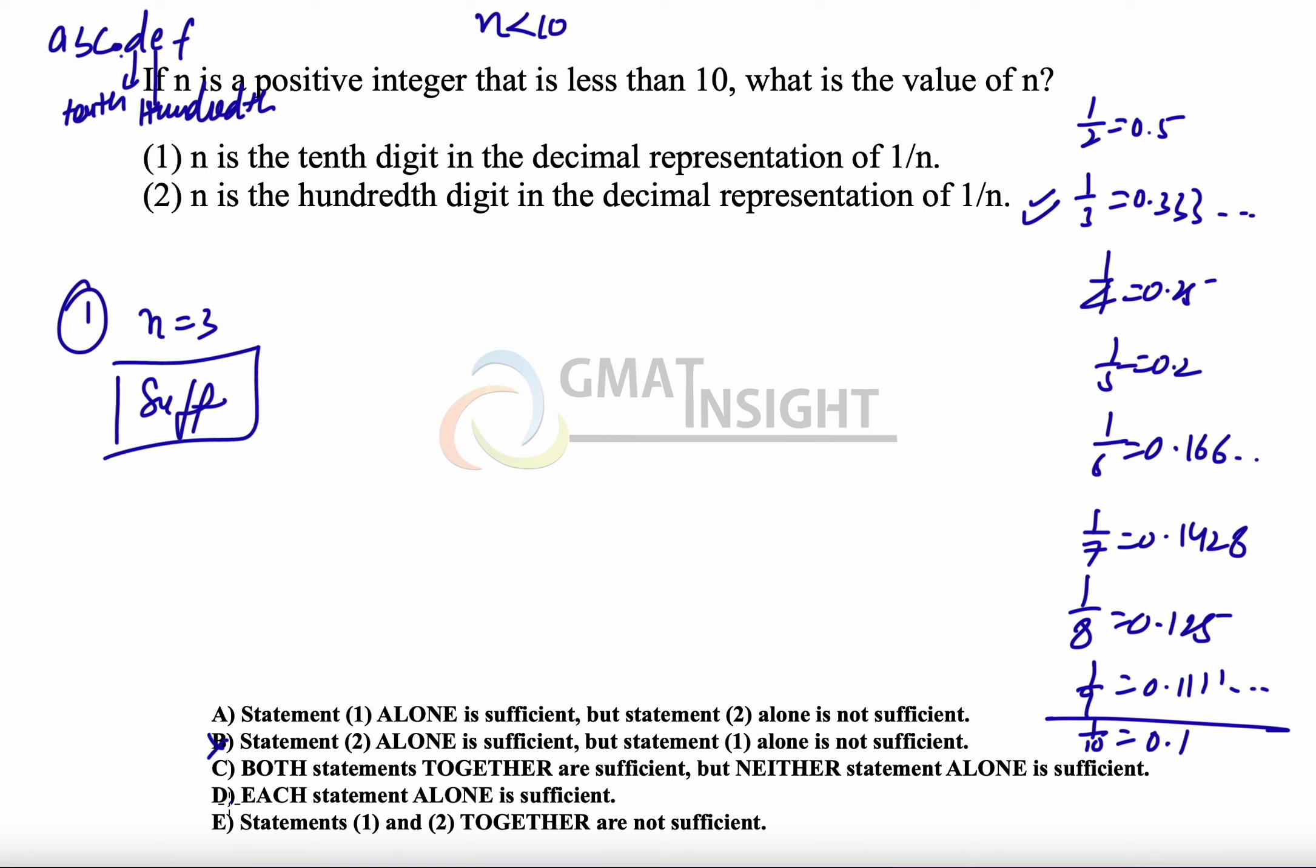So, the answer has to be between option A and option D. Now, B, C, E can be eliminated. When we look at the second statement,